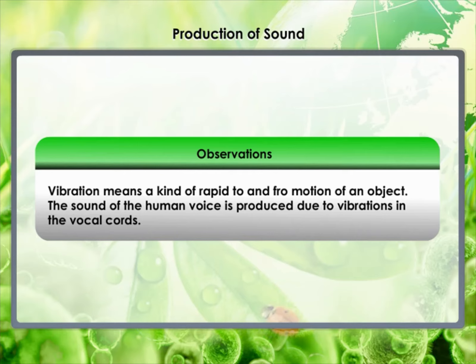Vibration means a kind of rapid to-and-fro motion of an object. The sound of the human voice is produced due to the vibrations in the vocal cords. When a bird flaps its wings, we can hear some sound.